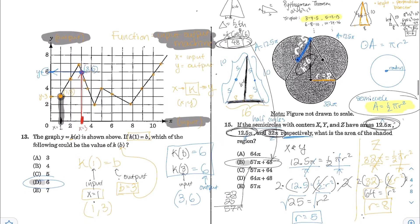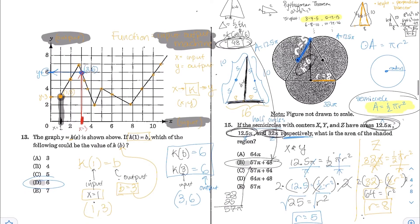The key to number 15 was using the formula for the area of a semicircle — half the area of a full circle — and also Pythagorean theorem for this perpendicular bisector of the isosceles triangle.